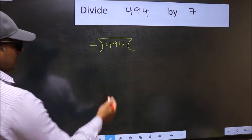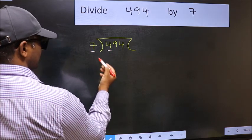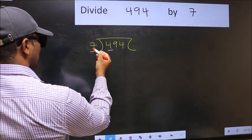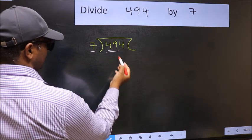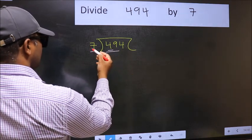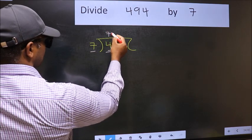Here we have 4 and here 7. 4 is smaller than 7, so we should take two numbers: 49. When do we get 49 in the 7 table? 7 sevens is 49.